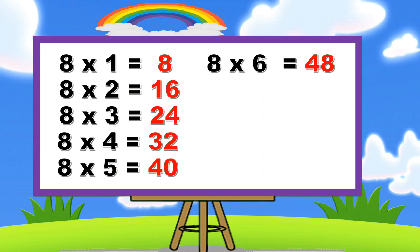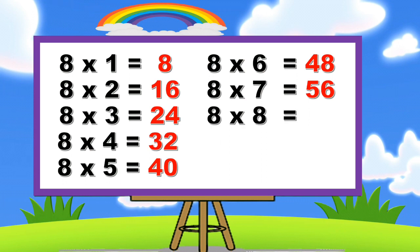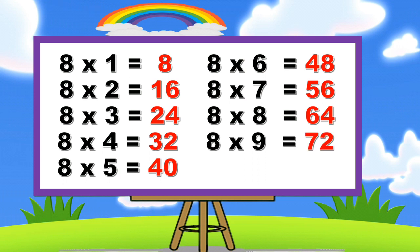Eight sixes are forty-eight. Eight sixes are forty-eight. Eight sevens are fifty-six. Eight sevens are fifty-six. Eight eights are sixty-four. Eight eights are sixty-four. Eight nines are seventy-two. Eight nines are seventy-two. Eight tens are eighty. Eight tens are eighty.